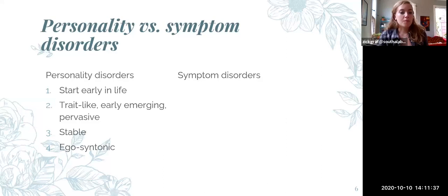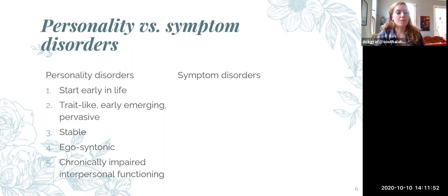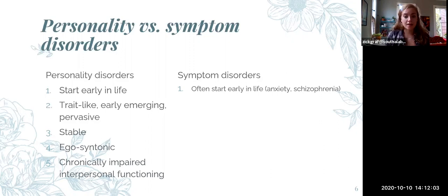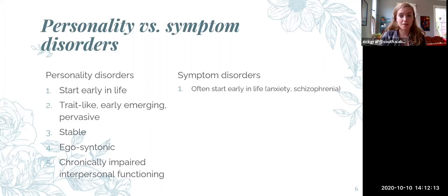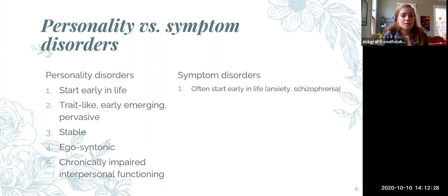To contrast this with symptom disorders: symptom disorders do often start early in life — anxiety typically has onset in childhood, and even schizophrenia can have prodromal symptoms beginning in adolescence. Symptom disorders can also be trait-like — neuroticism is a personality trait that's a risk factor for most personality disorders as well as most symptom disorders. Other trait-like features include the schizophrenia neoprodrome or hypomanic temperament, a personality type predisposing people to bipolar disorder. Symptom disorders differ in that while they can be stable, they often have a waxing and waning course — people have exacerbations under stress, then more minimal symptoms at other times.